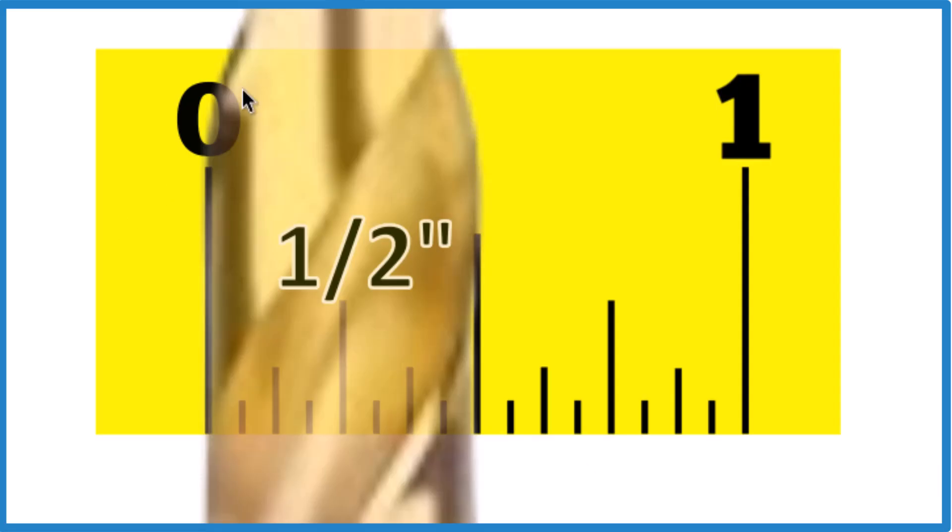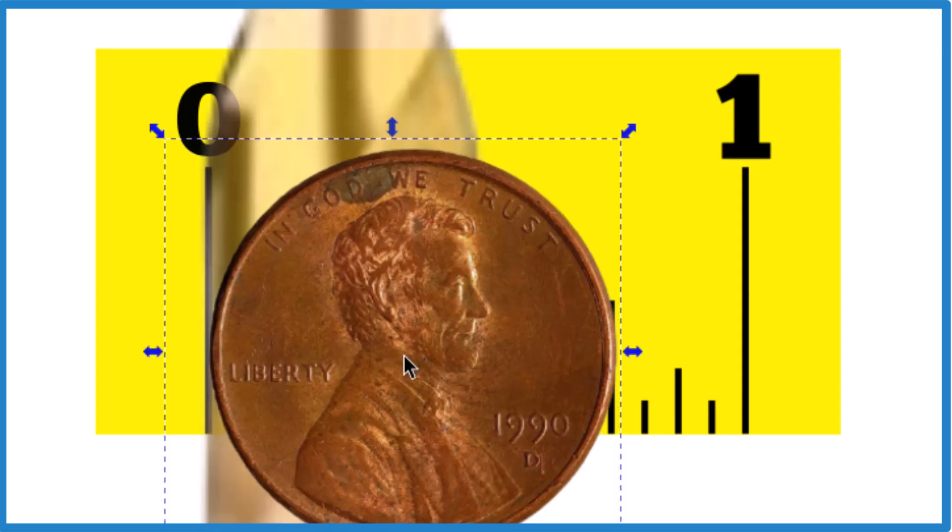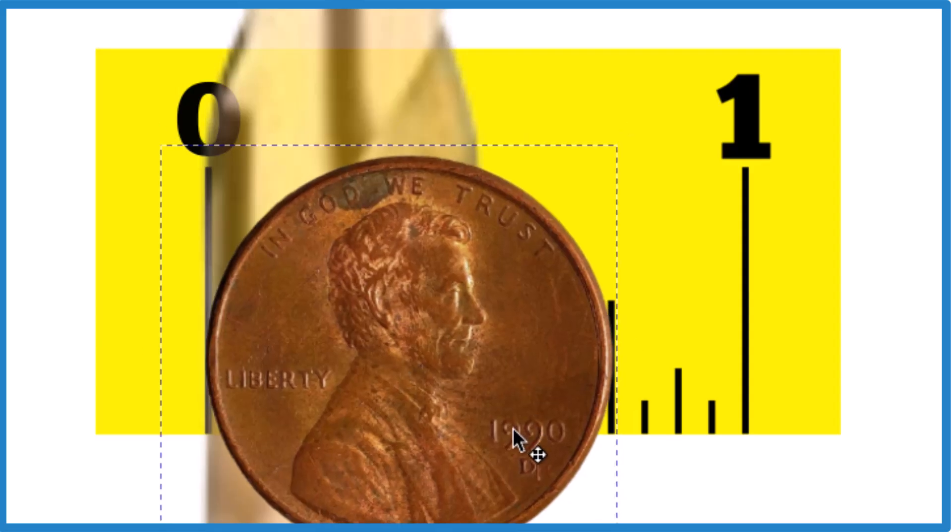So to start out, this is 1 inch, 0 to 1 inch right here on a ruler or tape measure. And this is a penny, a U.S. penny here, and it's 3/4 of an inch. That's its diameter there.